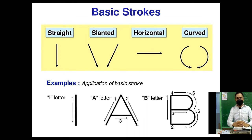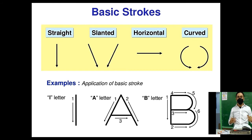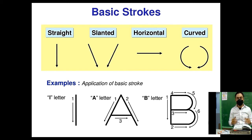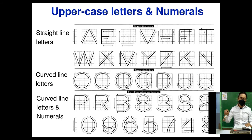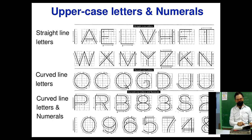Basic strokes include straight, slanted, horizontal, and curve strokes. Examples of their application include letters such as L or the number one, and letters A and B. The uppercase letters and numerals will be your first plate, or first project — which we call a 'plate' in architecture.